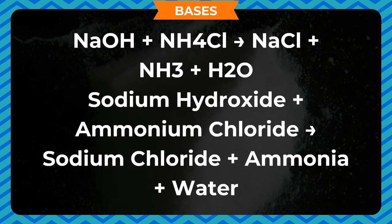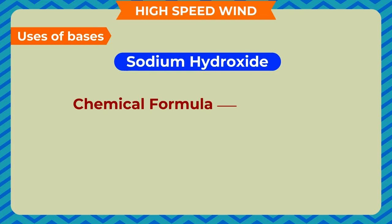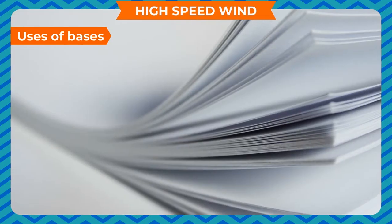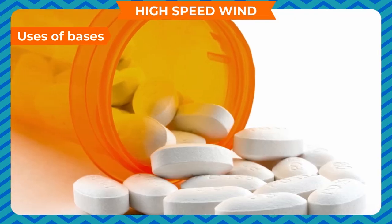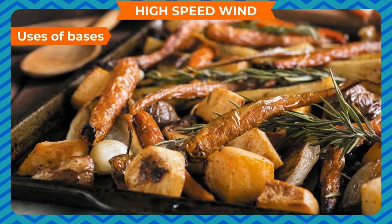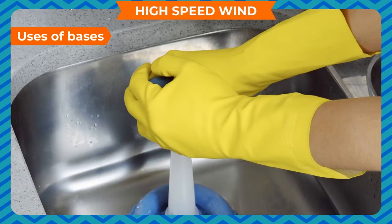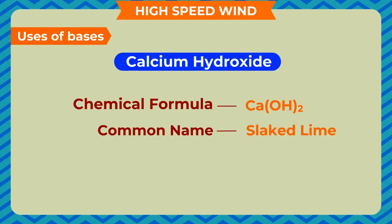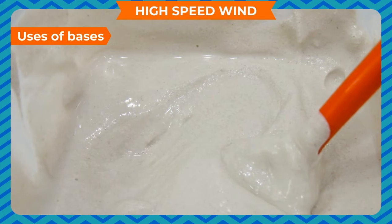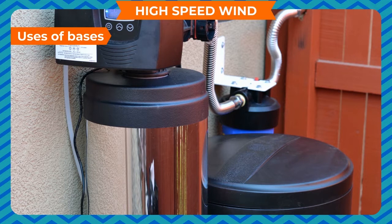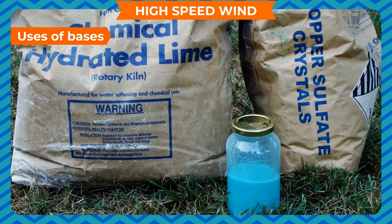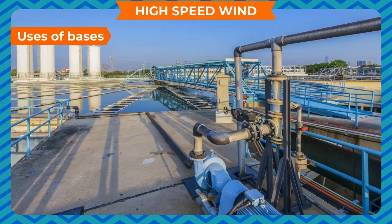Reaction with ammonium salts: on reacting with a base, ammonium salts decompose. NaOH + ammonium chloride → sodium chloride + ammonia + water. Uses of bases — sodium hydroxide (NaOH), common name caustic soda: used in preparation of soaps and detergents, manufacture of paper, rayon, and other chemicals, manufacturing medicines, petroleum refining, chemical peeling of fruits and vegetables, soft drink preparation, and unblocking drains. Calcium hydroxide (Ca(OH)2), common name slaked lime: used in preparation of plaster of Paris and mortar, for whitewashing, and to make hard water soft.